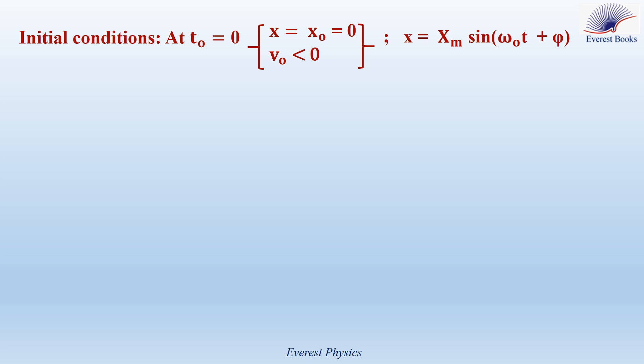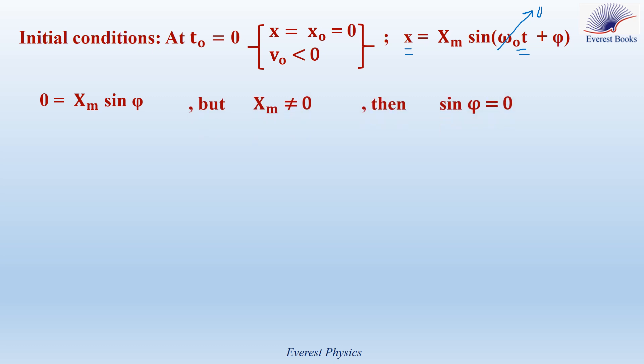Using the time equation x equals xm·sin(omega_0·t + phi), we substitute x0 at t equals 0: 0 equals xm·sin(phi). Since xm is not zero, sin(phi) equals 0. So the possible values of phi are 0 and π radians. The determination of phi is discussed in detail in a video titled 'Initial Phase Angle in Simple Harmonic Motion,' which you can watch for more details.